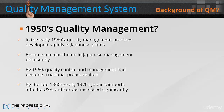In the early 1950s, quality management practices developed rapidly in Japanese plants, and it became a major theme in Japanese management philosophy, such that by 1960, quality control and management had become a national preoccupation. By the late 1960s and early 1970s, Japan's imports to the USA and Europe increased significantly due to its cheaper, higher quality products compared to Western counterparts.